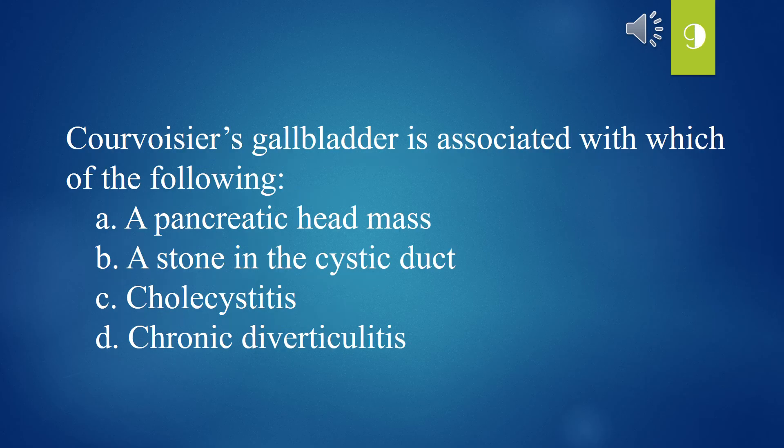Courvoisier's gallbladder is associated with which of the following? A. A pancreatic head mass. B. A stone in the cystic duct. C. Cholecystitis. D. Chronic diverticulitis. The answer is A. A pancreatic head mass.